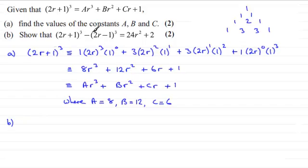Now in part (b), we've got to show that (2r + 1)³ - (2r - 1)³ is equal to 24r² + 2. So what I'll do is put down an introduction: (2r + 1)³ - (2r - 1)³, and I'm going to write identical to again.